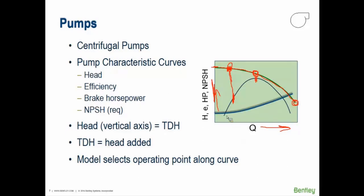There are additional curves to consider: a horsepower curve, an NPSH curve, and a system curve. As you increase flow through a pipeline, head loss increases. Where the system curve intersects the pump curve is the operating point. A steep system curve means multiple force mains; a shallow system curve means a large diameter pipe, allowing the pump to deliver more flow.